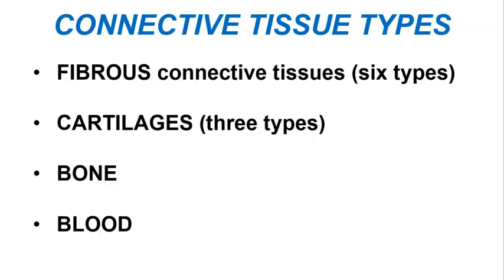We begin our overview of the connective tissues by examining the major types. These are the fibrous connective tissues, which all contain protein fibers in their extracellular matrix and have six varieties. We also have the cartilages, which also contain protein fibers in their extracellular matrix, with three types of cartilage. We also see bone, and finally blood.